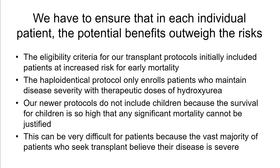When considering enrolling a patient, we must weigh benefits and risks for that individual. Our transplant protocol eligibility criteria initially included patients at increased risk for early mortality. Since we have more experience with HLA-matched sibling transplant, we've relaxed those criteria slightly. For the haploidentical protocol, we enroll more severe patients — only those who maintain disease severity despite therapeutic doses of hydroxyurea, the only drug we really have to treat these patients. Our newer protocols do not include children, because survival for children is so high that significant mortality cannot be justified: 98% of children with sickle cell disease in the United States are expected to survive to age 18.